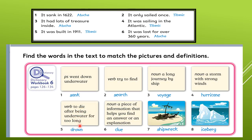Find the words in the text to match the pictures and definitions. 'Went down underwater' — sank, past of sink. Sink, sank, sunk. 'Try to find' — search. 'A long journey by ship' — voyage. 'A storm' — hurricane. 'To die after being underwater for too long' — drown. There is a difference between 'sank' and 'drown': 'sink' goes underwater, 'drown' means to die, to pass away, underwater. 'A piece of information that helps you find an answer' — clue. 'Shipwreck' — a broken, damaged, destroyed ship. 'Iceberg' — what the Titanic hit.